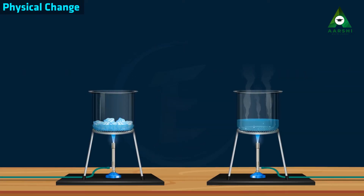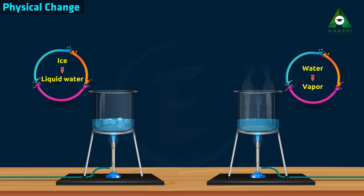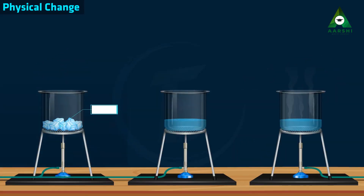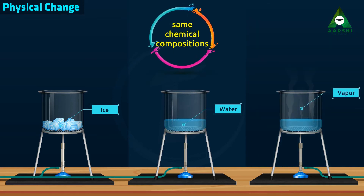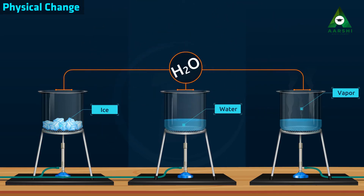Example: melting of ice into liquid water, and change of water into vapour. Ice, water and vapour all have the same chemical composition. The chemical formula of ice, water and vapour is H2O.